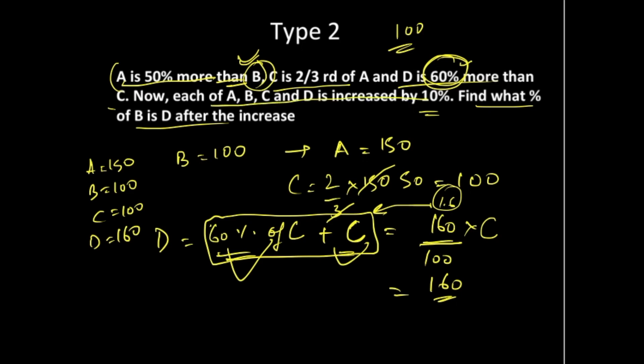Now each of these values is increased by 10%. 10% of 150 is 150 times 10/100. The zeros cancel out, so there's an increment of 15 for A, making it 165. Similarly, B becomes 110 with 10% increment, C also becomes 110, and D becomes 160 plus 16, which is 176.